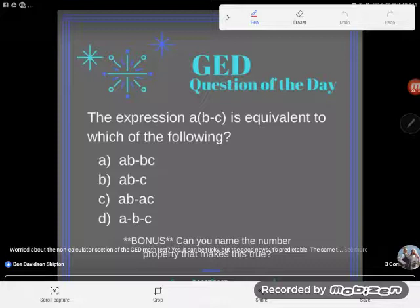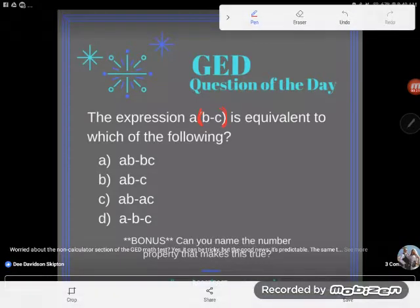It says the expression A, and I can read these parentheses as times the quantity. So A times the quantity of B minus C is equivalent to which of the following?